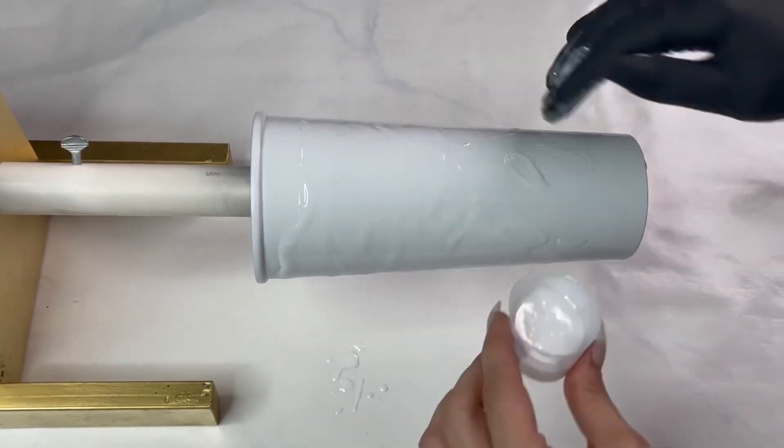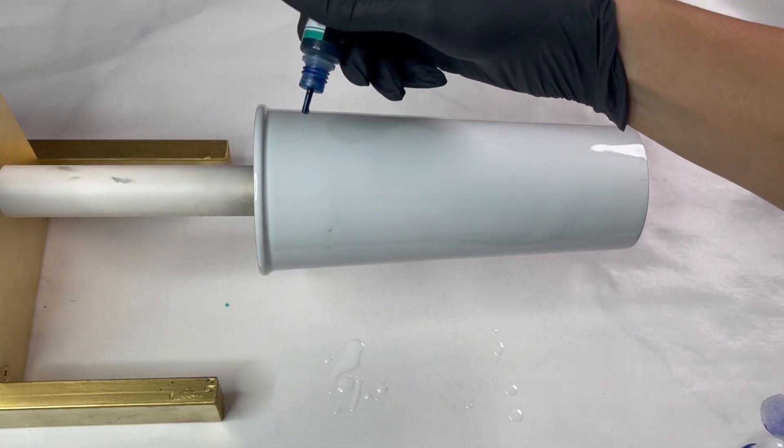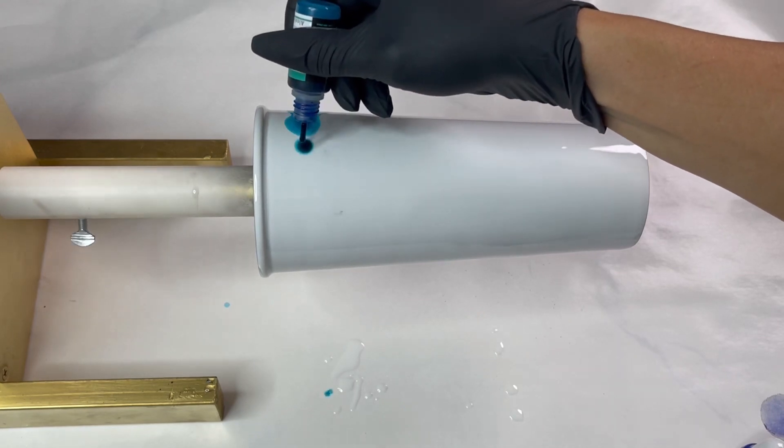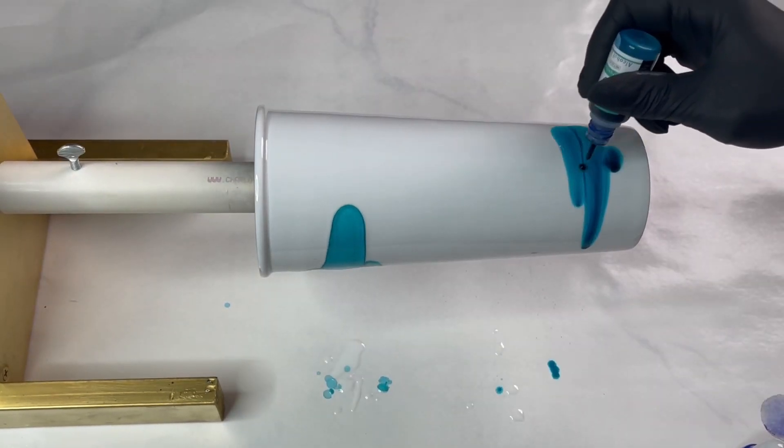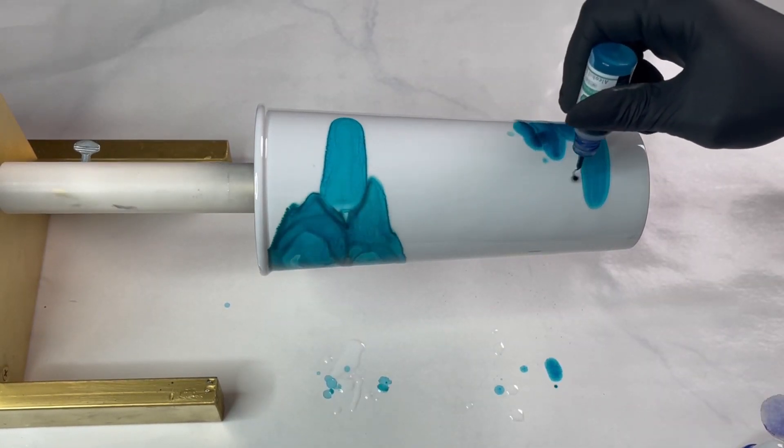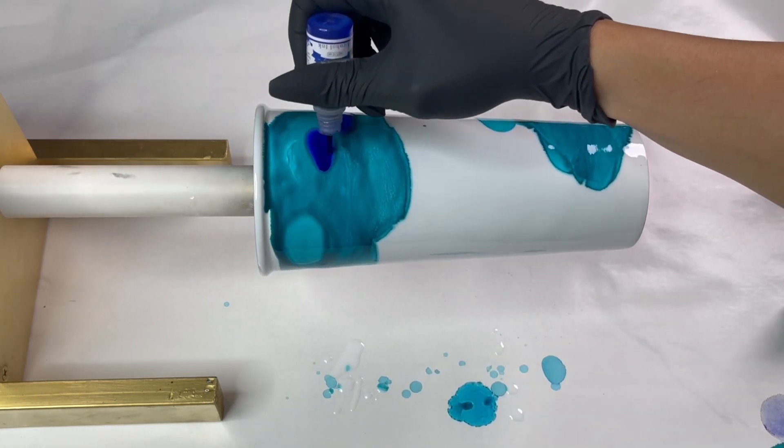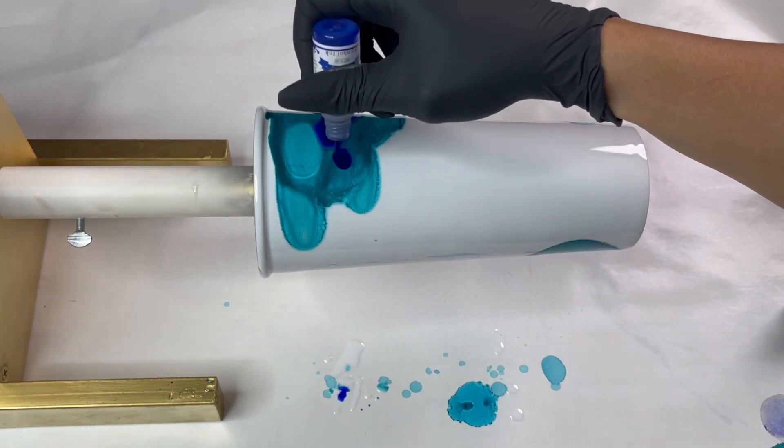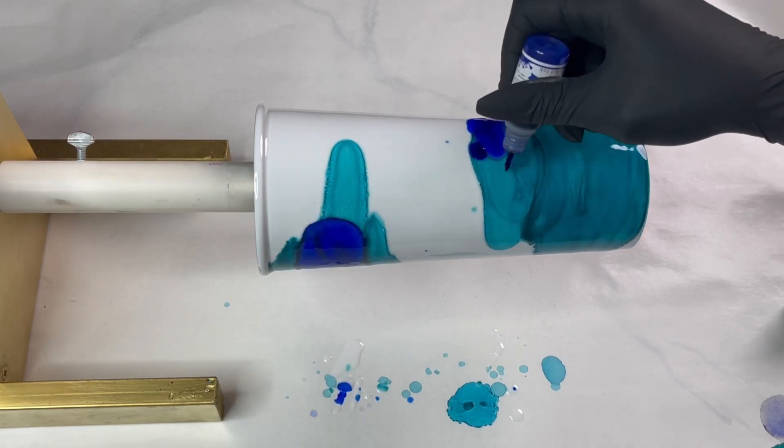So just spreading the layer of epoxy out evenly, then taking my alcohol inks. This set I just got from Amazon, it was pretty cheap for a decent size set. So just kind of dripping it on in random spots and just a couple different colors.